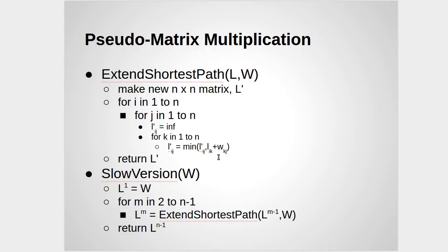But whereas a normal matrix multiplication is the sum of the products, this pseudo-matrix multiplication is the minimum of the sums.